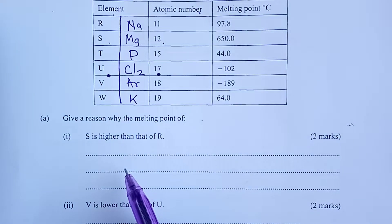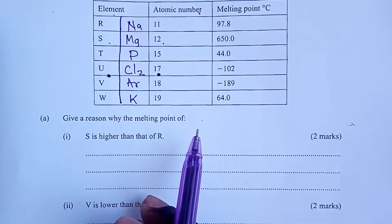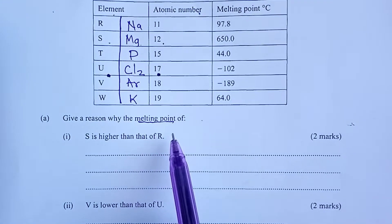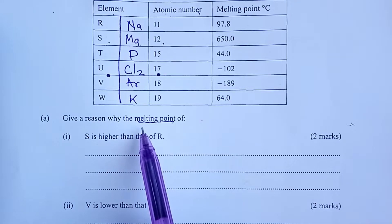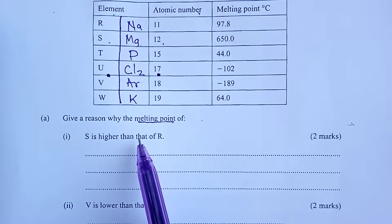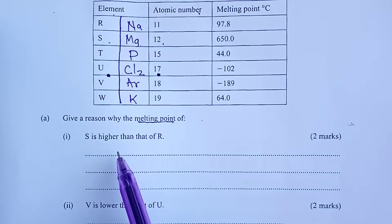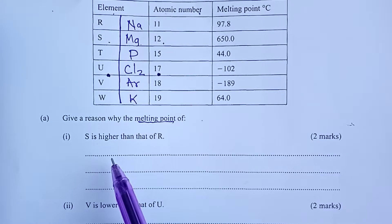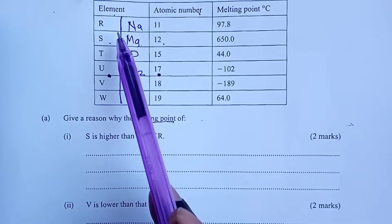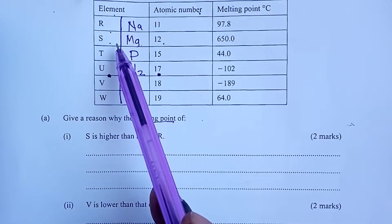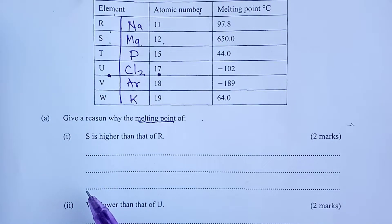They both have what we call metallic bonds because they are both metals, but when it comes to melting points, we need to look at the strength of the bonds because that is what is going to determine the melting point. If a metal has stronger bonds, the melting points will be higher, and we also learned that the strength of the metallic bond in metals is determined by the number of delocalized electrons. For this case, R will have one delocalized electron, while S usually has two per mole of it.